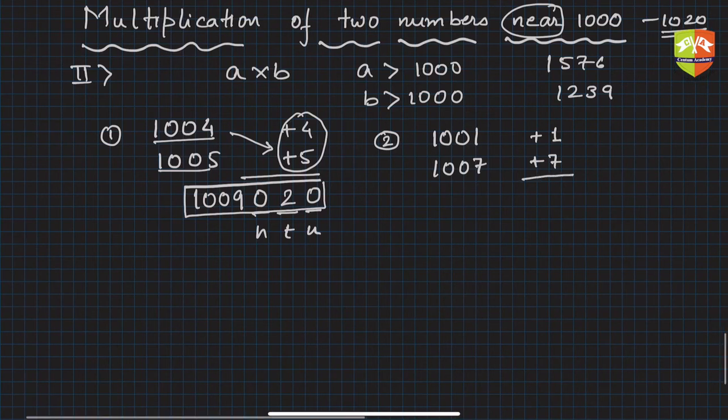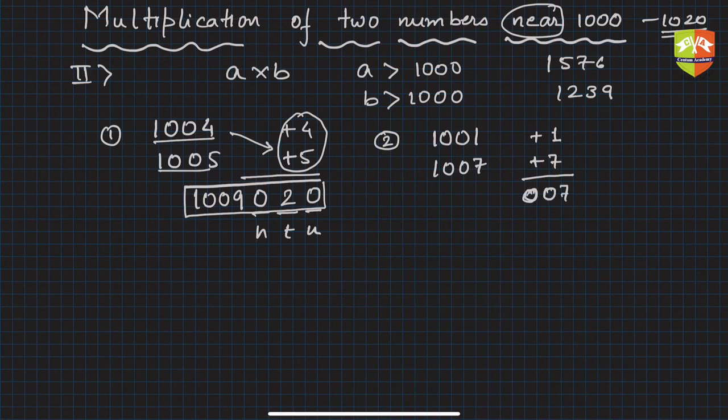Now multiply again. So what will you get? One times seven is seven, but here we will be writing 0007, not 007. So 007, correct?